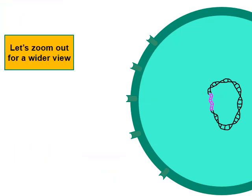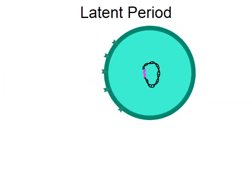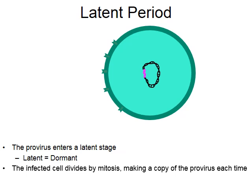Let's zoom out for a wider view of our cell. What comes next is a latent time period — the provirus will enter a stage of latency, and the word latent simply means dormant. The viral DNA will lie dormant inside of the host cell, and the host cell carries on its activities as if nothing's wrong. The infected cell simply carries on and eventually divides by mitosis, making a copy of the provirus each time.